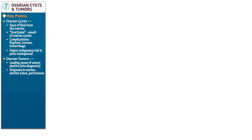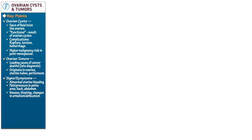Signs and symptoms of ovarian cysts and tumors overlap and include abnormal uterine bleeding, pain or pressure in the pelvic area, back, and abdomen, often pain during intercourse, nausea, bloating, and changes in urination or defecation. Larger adnexal masses can produce feelings of bloating and stomach fullness, which can lead to weight loss.